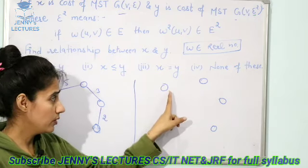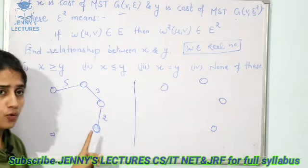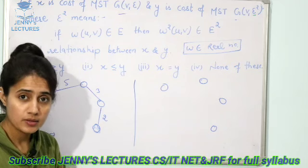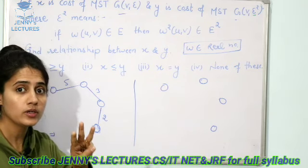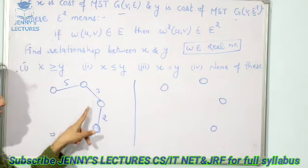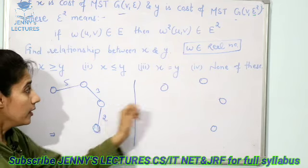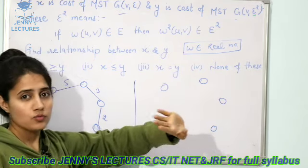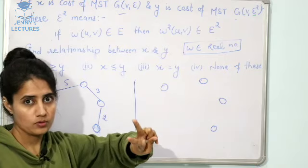Suppose we have 1, 2, 3, 4 - four number of vertices in MST, then number of edges would be 3. That is the rule. 1, 2 and 3. Here obviously we will have 3 number of edges.